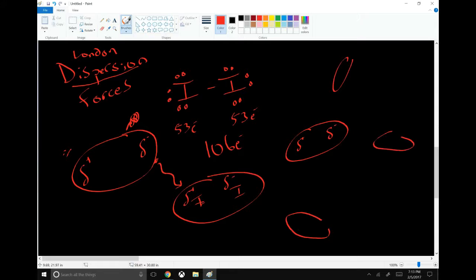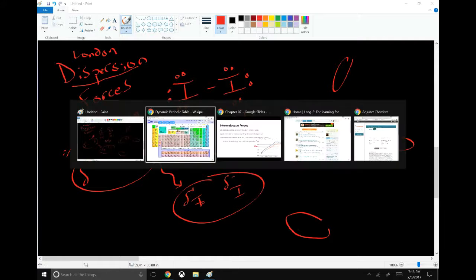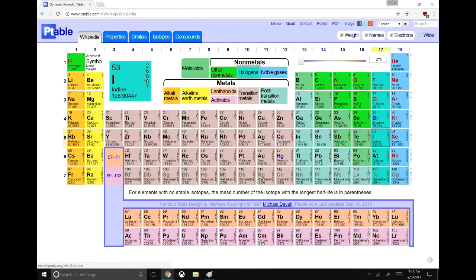And the more electrons there are, the more likely this is to happen, and the more significant it's going to be. So you can actually look at the elements in the periodic table and see this influence taking place. For example, we'll look at the four halogens: fluorine, chlorine, bromine, and iodine. They all have the same chemistry but very different numbers of electrons.